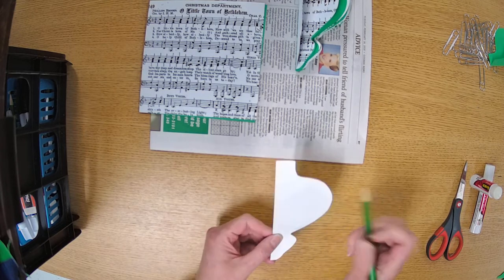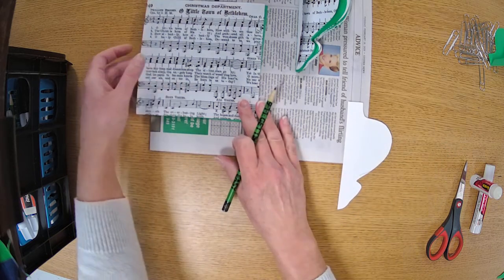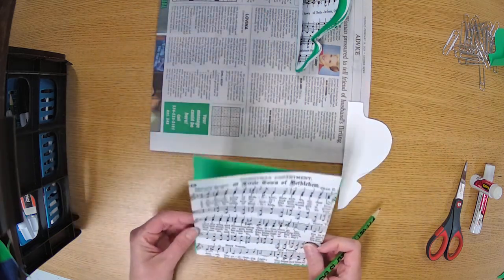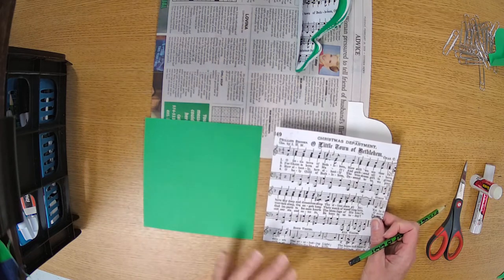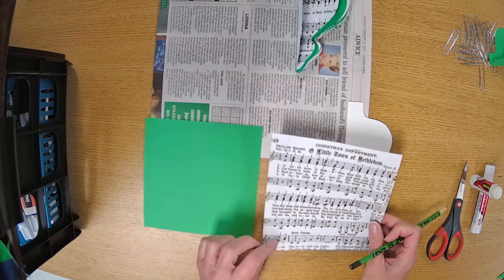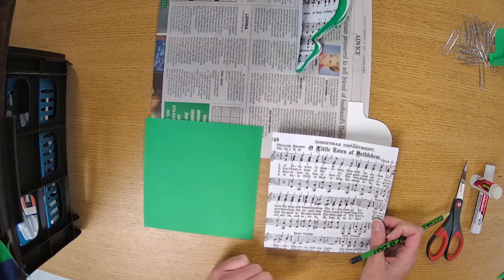So you can see here that I have half of an ornament. Then you need to have two types of paper. You could use two colors of paper, or I've chosen green and then paper that has Christmas carols printed on it.